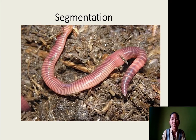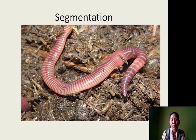Next is segmentation. For example, the earthworm has a segmented body. Based on whether the body is segmented or not, we can classify organisms further.